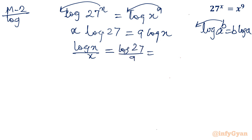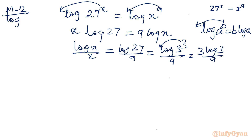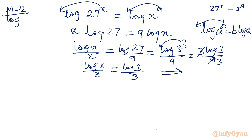Writing 27 as 3 cubed over 9, then bringing the power down gives 3 log 3 over 9. Cancelling 3 and 9, the left hand side is log x over x and the right hand side is log 3 over 3. Comparing both sides, x equals 3 — the same solution.